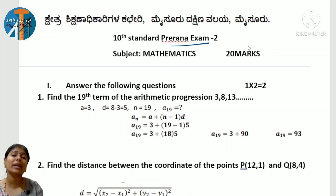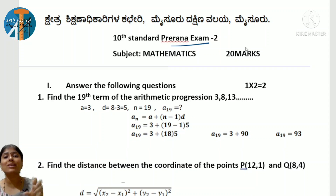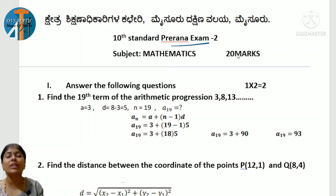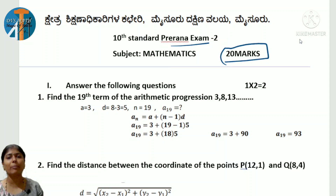This is Prerana Exam 2. See that this lesson is complete. Prerana 1 covered lessons like Construction, Circle, Pair of Linear Equations, and Triangles. But in Prerana 2, it covers Arithmetic Progression, Coordinate Geometry, Statistics, and also Triangles and Circles combined. This paper is for 20 marks, and the previous was also 20 marks, making a total of 40 marks easy.